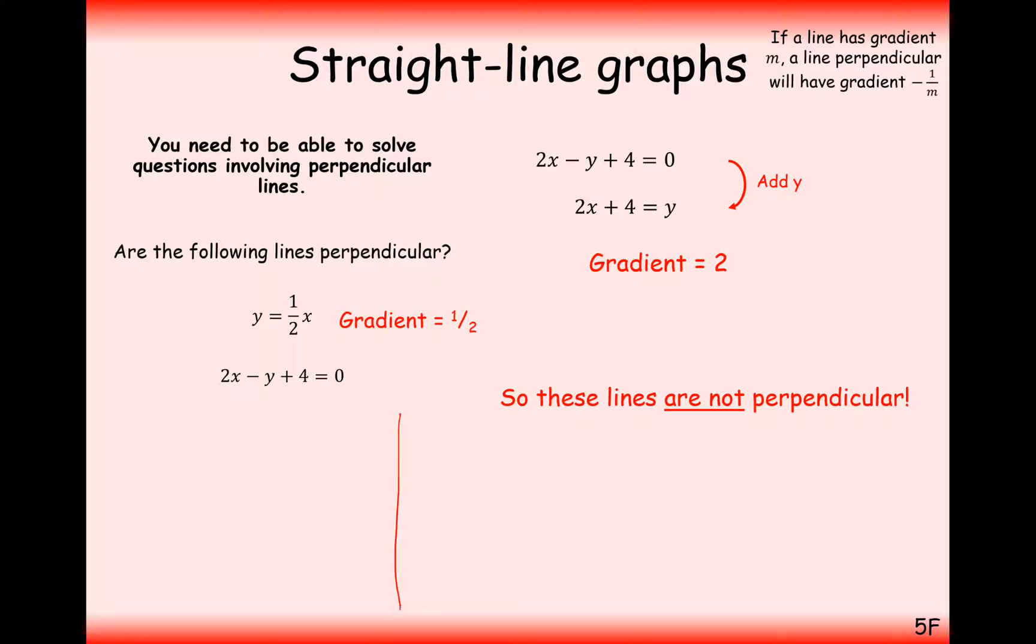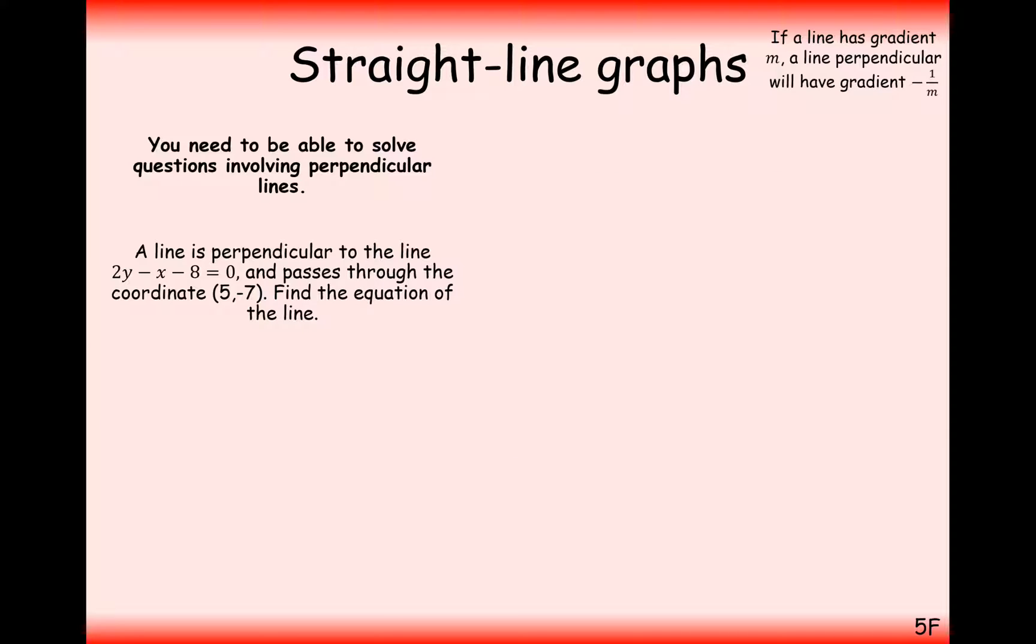If you were to effectively sketch this out, you'll have one graph that has a gradient of a half and one gradient that has a gradient of two. And you can clearly see here that those two lines don't meet at a right angle. One needs to be positive, one needs to be negative.